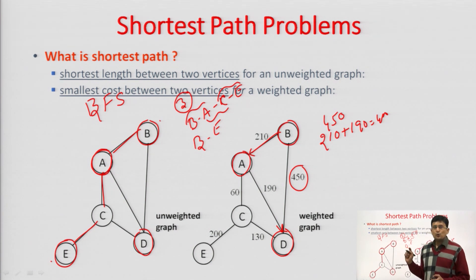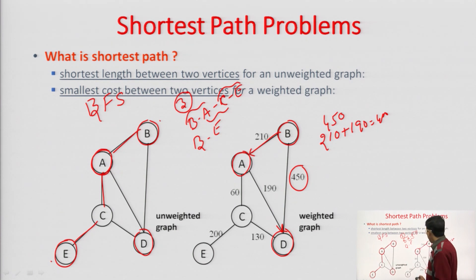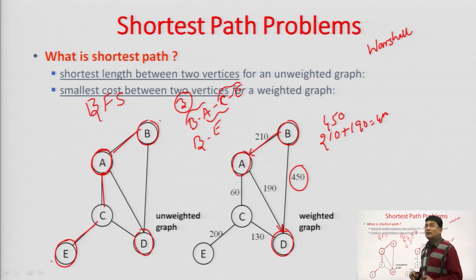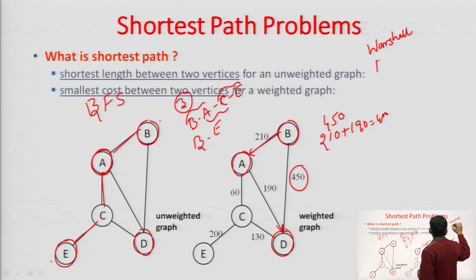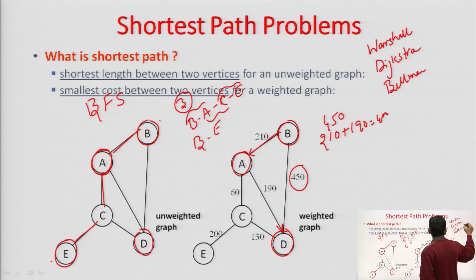Between these two, 400 is minimum, so we will pick this path. If the graph edges have weights assigned, BFS will not work — you will have to employ some other mechanism. For finding out the shortest path between pairs of stations with weights, you may use Warshall's algorithm for every pair of stations, or you can employ Dijkstra's algorithm for single source shortest path, or apply the Bellman-Ford algorithm where negative weight cycles exist in the graph.